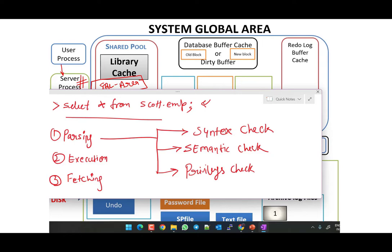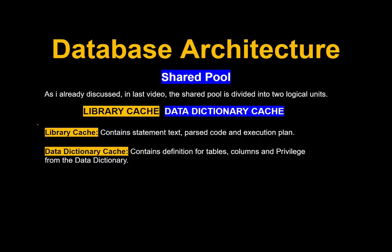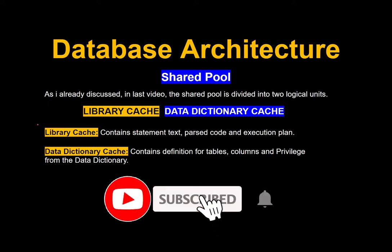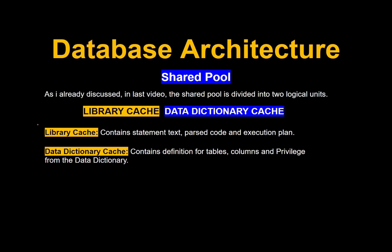The syntax check verifies that the query is written perfectly - that is the syntax check. If the syntax check is verified, it goes to the next process: the semantic check. All three processes happen in the shared pool, which has two units: the library cache and the data dictionary cache. The library cache contains statement text, parse code, and execution plan; the data dictionary cache contains definitions of tables, columns, and privileges.